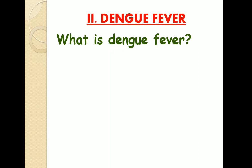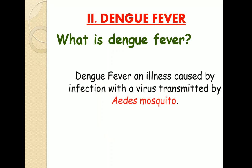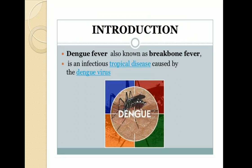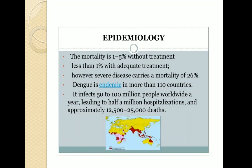Coming towards our next hemorrhagic fever virus, which is dengue fever. Dengue fever is an illness caused by infection with a virus transmitted by the Aedes mosquito. Also known as breakbone fever, it is an infectious tropical disease caused by dengue virus. Dengue is endemic in more than 110 countries, infects 50 to 100 million people worldwide per year, leading to half a million hospitalizations and approximately 12,500 to 25,000 deaths per year.